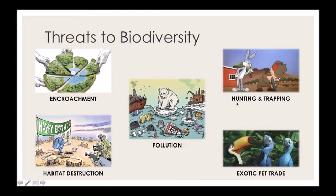Pollution is another major threat that impacts the ecosystems and habitats that endangered animals rely on. If their environment is polluted, it takes away resources they depend on, affects their health, and disrupts where they can live. Polluting the oceans is having a really strong impact on many aquatic species. Pollution is definitely a big culprit in why we see so many animals becoming endangered.